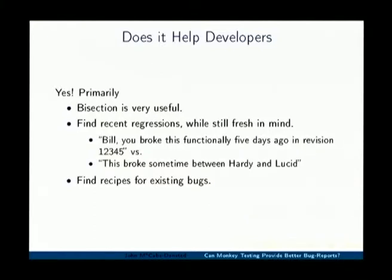Does it help developers? Yes. Developers in the Licks project found the bisection reports very useful — very useful to be able to say 'this is the particular change that caused the problem.' They found the ability for monkey tests to continually test the very latest snapshot very useful, because it often found the bug within about five days of it being introduced, while the bug was still fresh on their mind. Whereas typically users report against a stable version years past, and they don't remember why they did it.